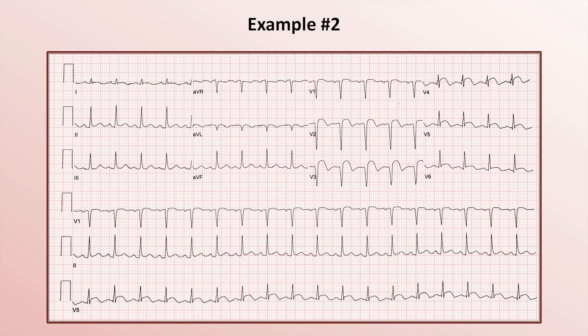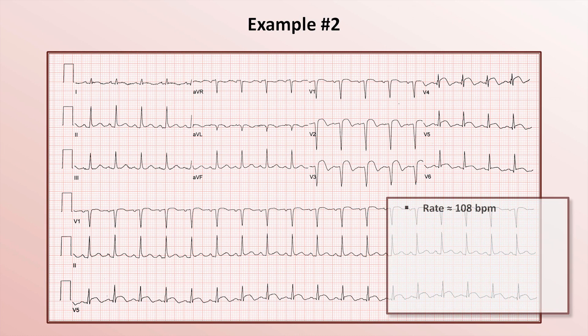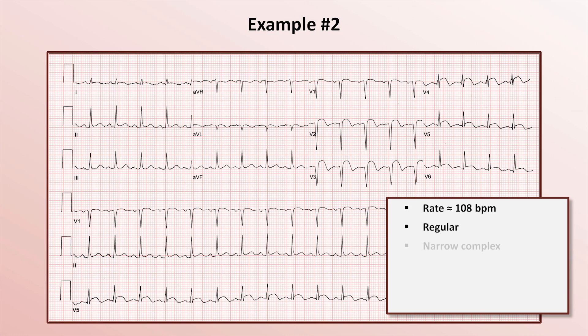For a slightly more precise estimate, which isn't generally necessary, we can use the 10-second rule. There are 18 QRS complexes across the recording, giving a more precise rate of 108 beats per minute. The rhythm is regular.